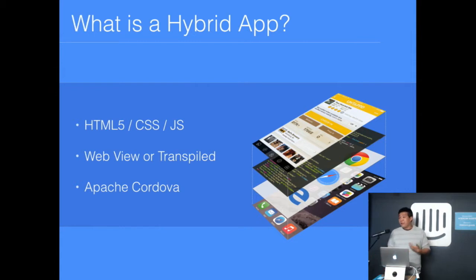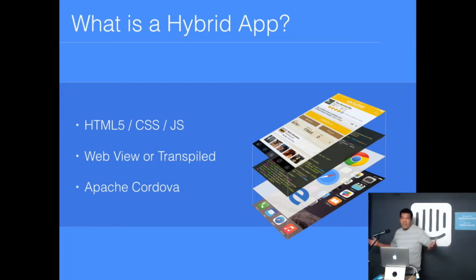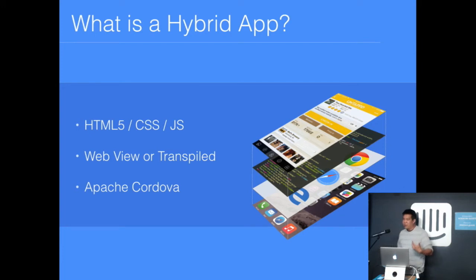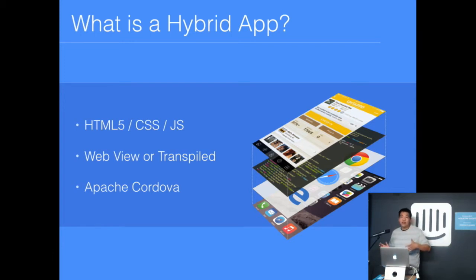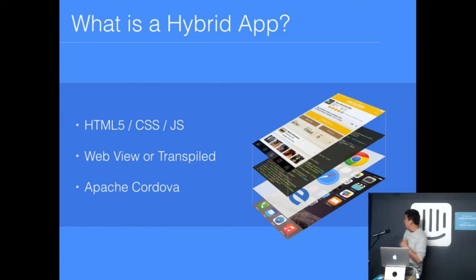We usually use Adobe PhoneGap — the open source version known as Apache Cordova — which does two things: it wraps all of our code into a web view and puts it into a native executable so we can put it into the App Store or Google Play. In more recent times, there are newer frameworks that do transpiling — they actually transpile your JavaScript directly down into native code. React Native would be a very popular current option there.